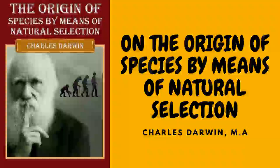But how could a savage possibly know when he first tamed an animal whether it would vary in succeeding generations and whether it would endure other climates? Has the little variability of the ass or guinea fowl, or the small power of endurance of warmth by the reindeer or of cold by the common camel, prevented their domestication? I cannot doubt that if other animals and plants equal in number to our domesticated productions, and belonging to equally diverse classes and countries, were taken from a state of nature and could be made to breed for an equal number of generations under domestication, they would vary on an average as largely as the parent species of our existing domesticated productions have varied.